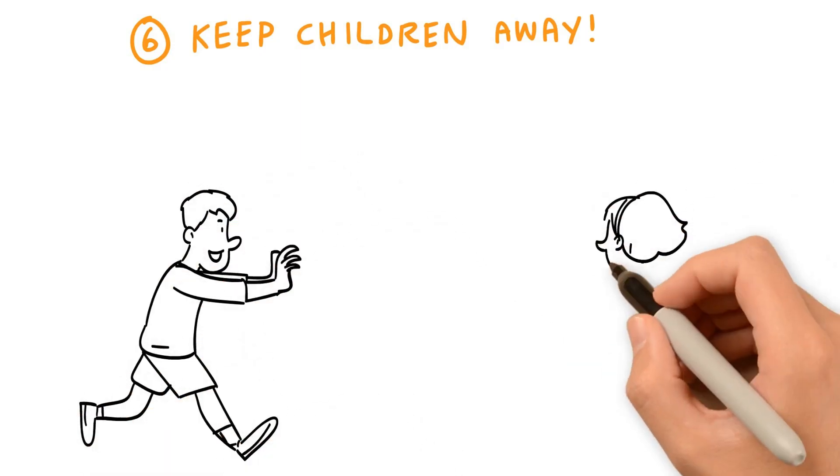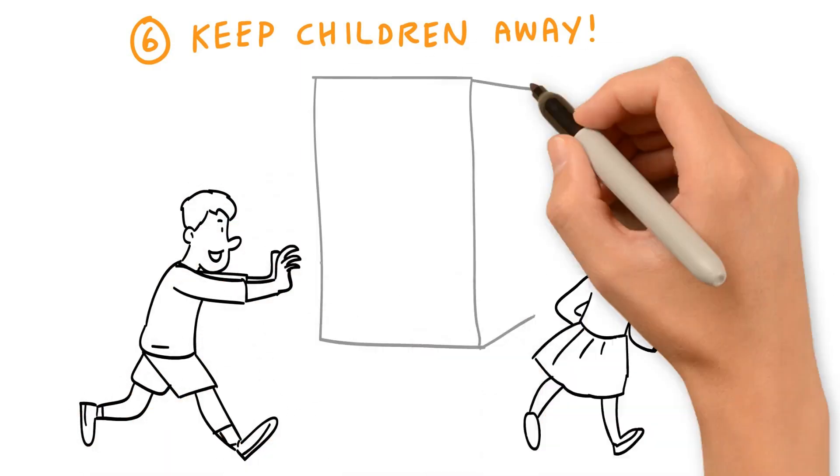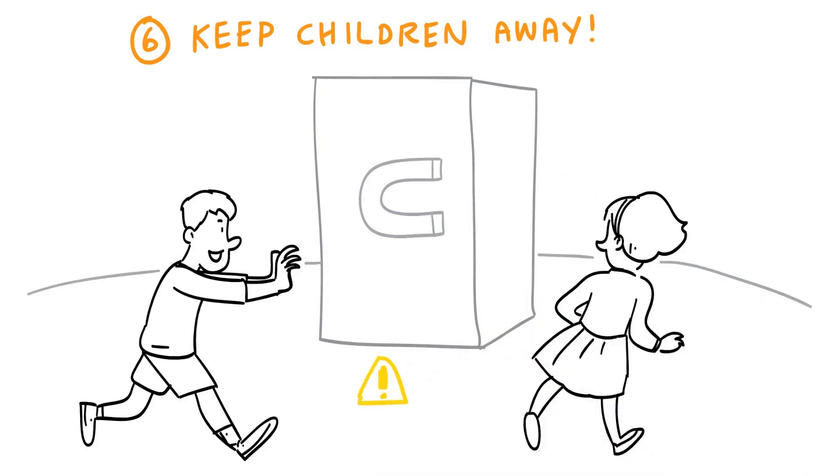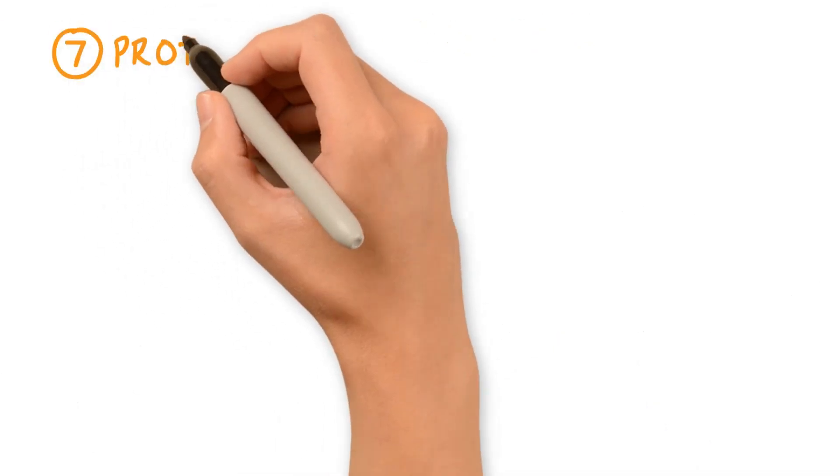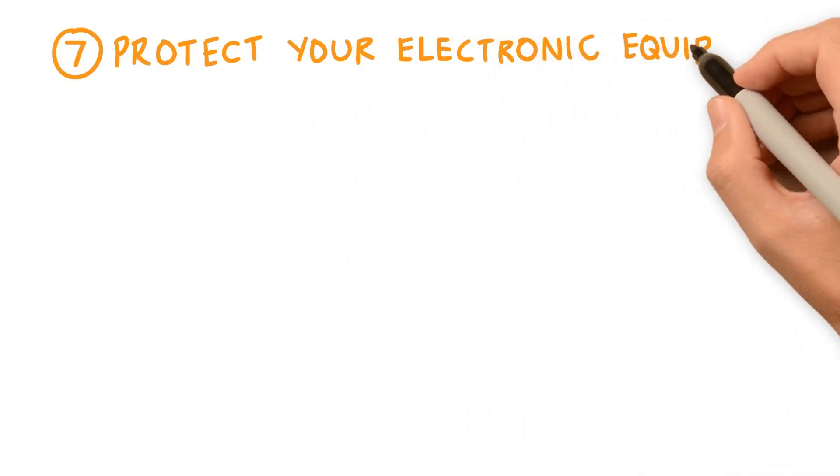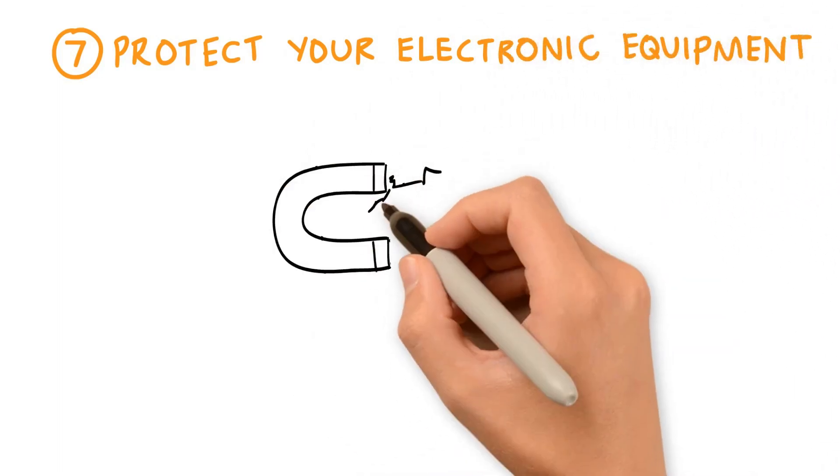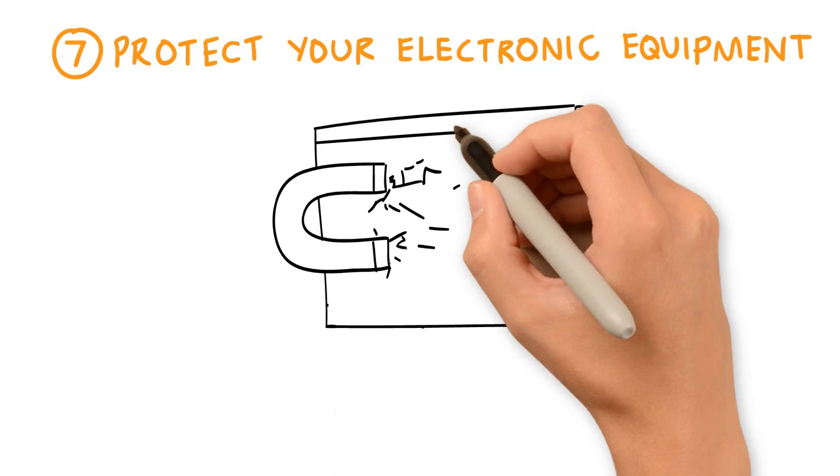Under no circumstances should children be allowed to handle or play with industrial magnets, nor should they be allowed in an environment where magnetic separators are in use. Magnets can erase stored information from phones, credit cards, tapes, computers, and other electronic devices if they come in close contact.